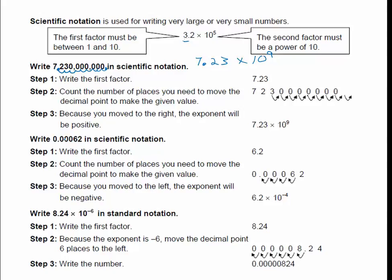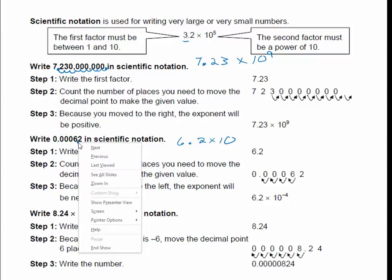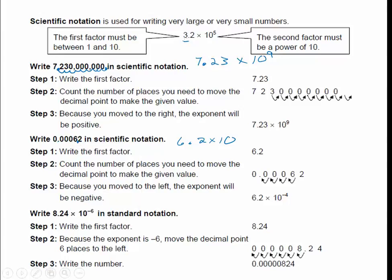Let's look at an example with a small number: 0.00062. First write 6.2 — it's always one digit and then the decimal. Then figure out the exponent by counting how many places to move the decimal from its original position to right after the 6: 1, 2, 3, 4 places. Since this was a small number, the exponent is negative 4, so it's 6.2 times 10 to the negative 4th.